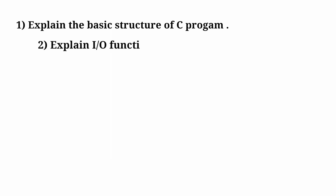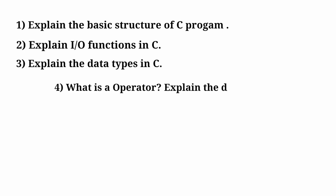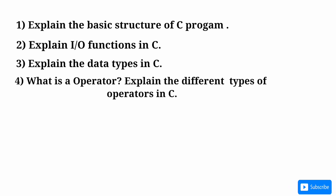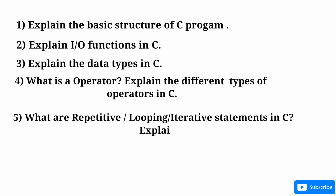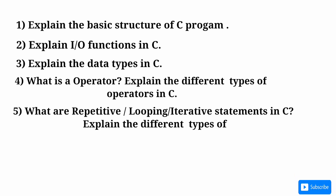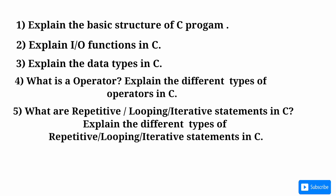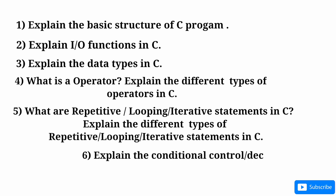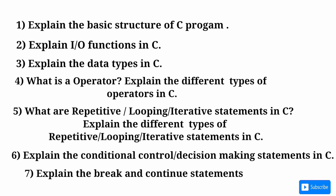Explain IO functions in C. Explain the data types in C. What is an operator? Explain the different types of operators in C. What are repetitive or looping or iterative statements in C? Explain the different types of looping or iterative statements in C. Explain the conditional control or decision-making statements in C. Explain the break and continue statements in C.